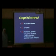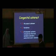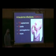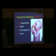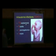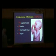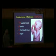Intrauterine infections may cause congenital cataract, and we call this TORCH syndrome. T stands for Toxoplasmosis, O for Other, R for Rubella virus, C for Cytomegalovirus, and H for Herpes.